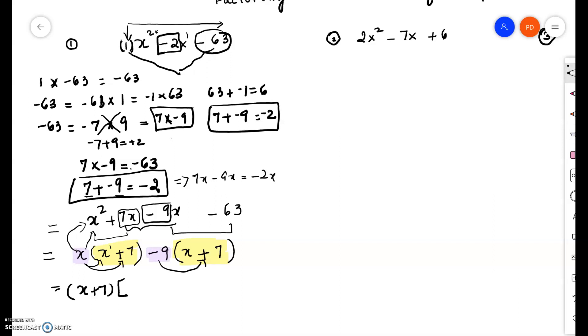So that is how I get x minus 9. So what we have done is we have completely factored the quadratic expression x squared minus 2x minus 63, which is equal to x plus 7 times x minus 9.